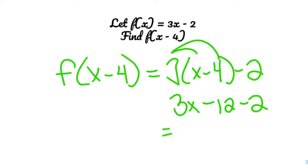And you combine like terms, you get 3x minus 14. That's it.